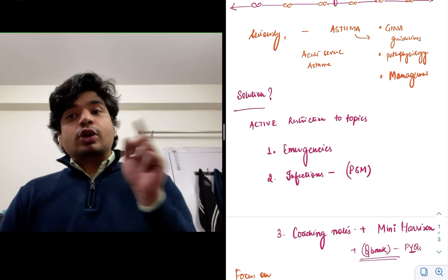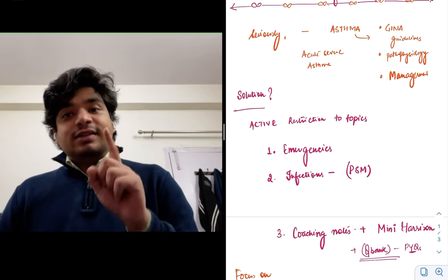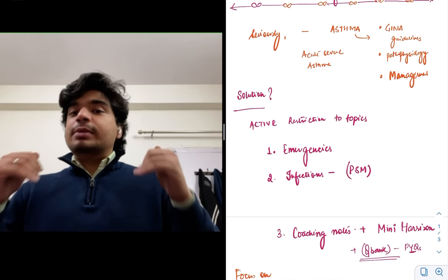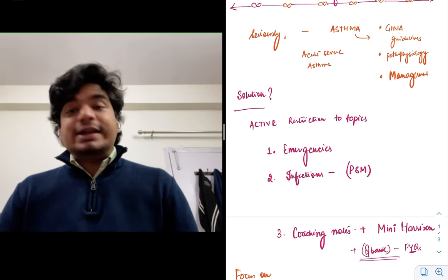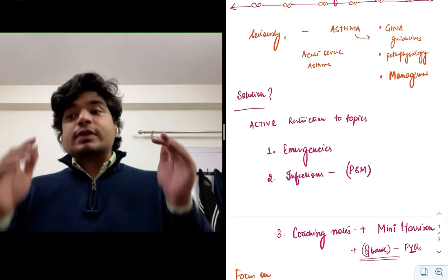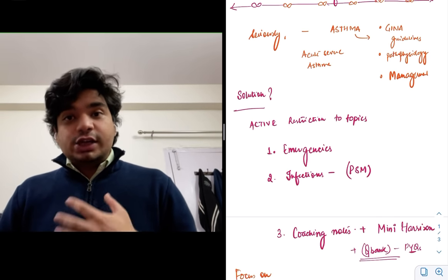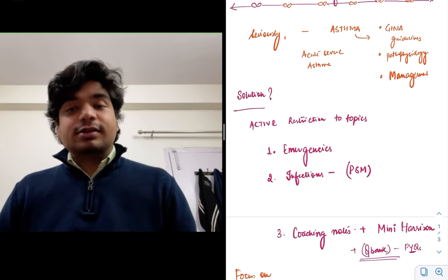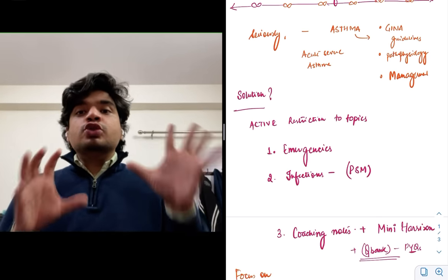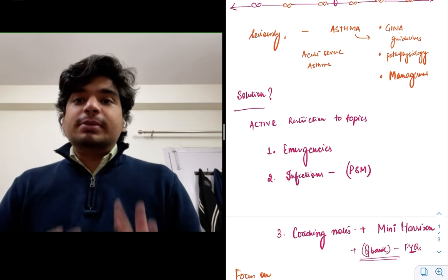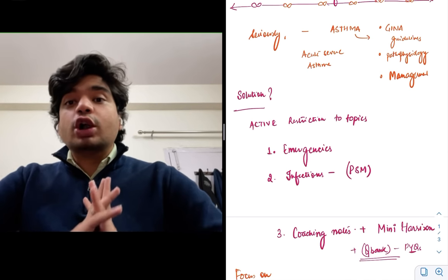The last and foremost in order to actively restrict yourself is to make sure that you have a set of notes. Now these notes can be any coaching that you attended, any app that you attended, so you restrict yourself. What I use personally, I feel is the best mechanism is to use Mini Harrison. Just cover those topics which are there in Mini Harrison. That's about it. You do not go beyond that.